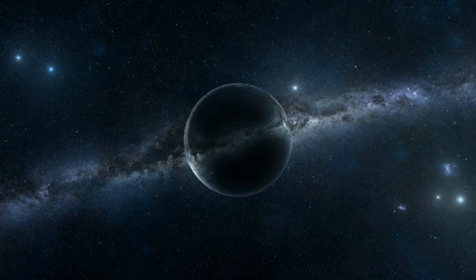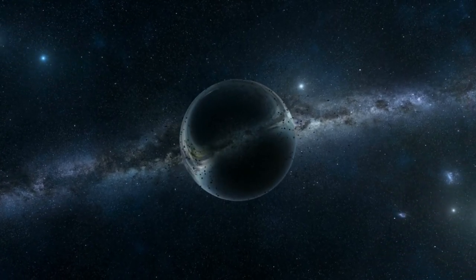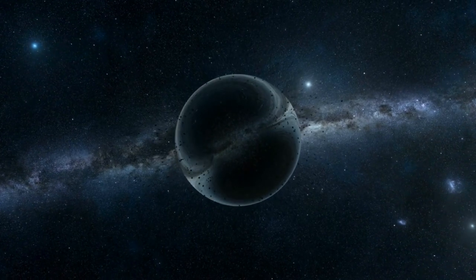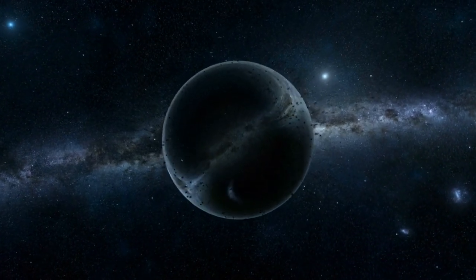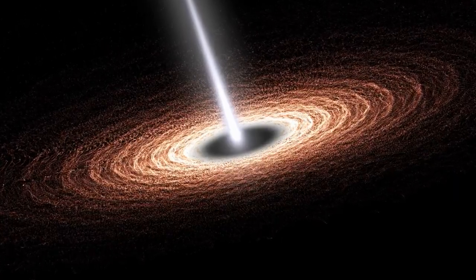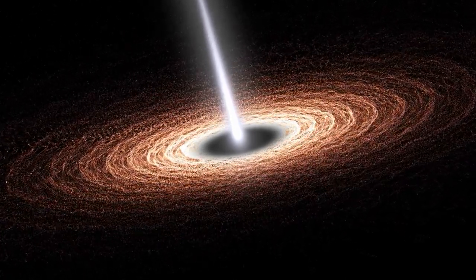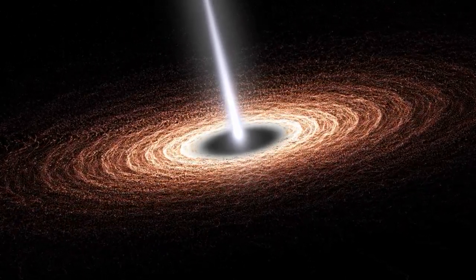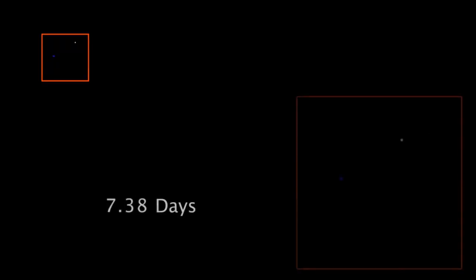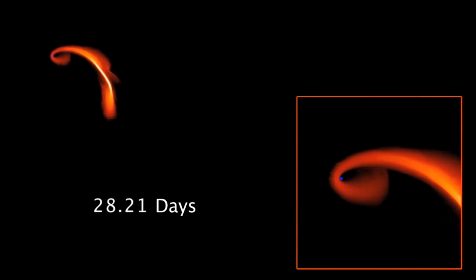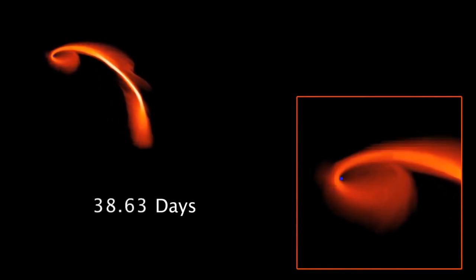So how do these celestial light shows form? The process begins when matter succumbs to the irresistible gravitational pull of a black hole. As this matter spirals ever closer, it endures staggering gravitational forces, causing it to heat up to unimaginable temperatures. This intense heat transforms the matter into a beacon of light, a spectacle we observe as a glowing halo around the black hole.